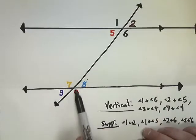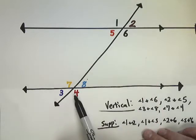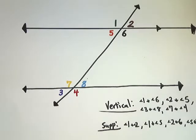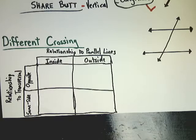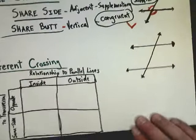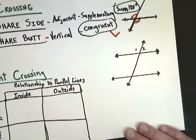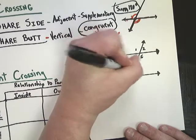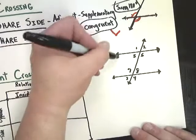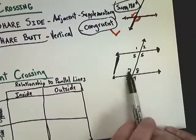What happens when we look at a relationship that goes from one crossing to the other — like angle 1 and angle 4? They're not on the same crossing and they share neither a side nor a butt. So we look at them differently, using a grid based on whether angles are inside or outside the parallel lines and which side of the transversal they're on.